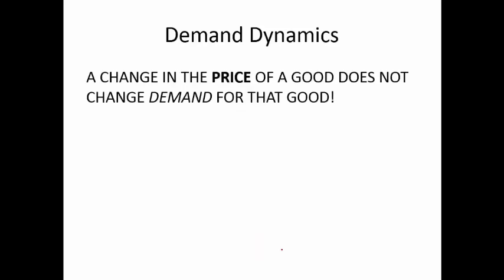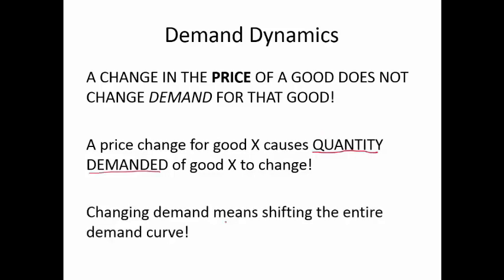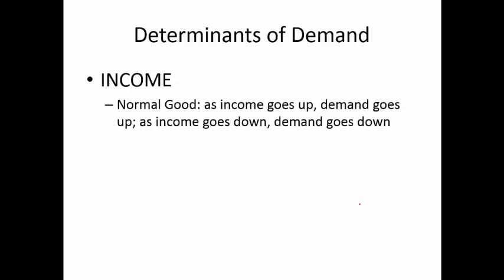So there's the demand curve and the law of demand. Now let's talk about dynamics. The change in the price of a good does not change demand for that good — price changes cause the quantity to go up and down along a given demand curve. To change the entire demand curve — to change demand itself — we need something other than the price of this good shifting. That's what we call the determinants of demand.